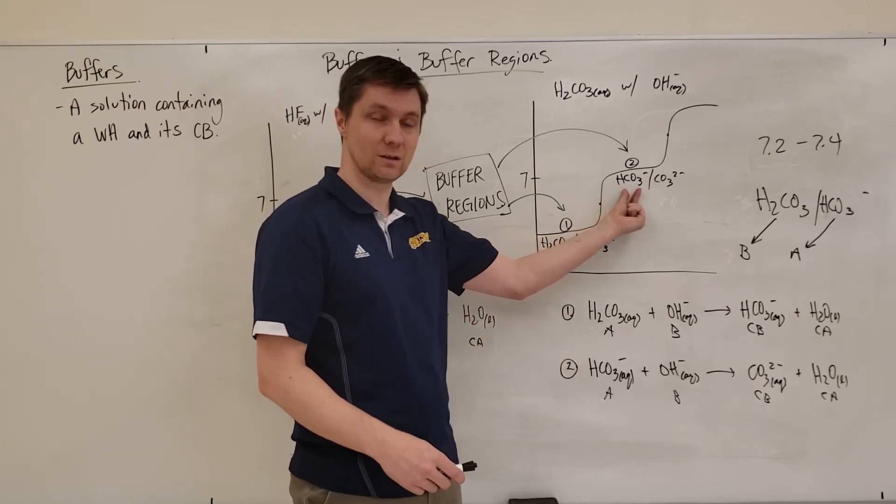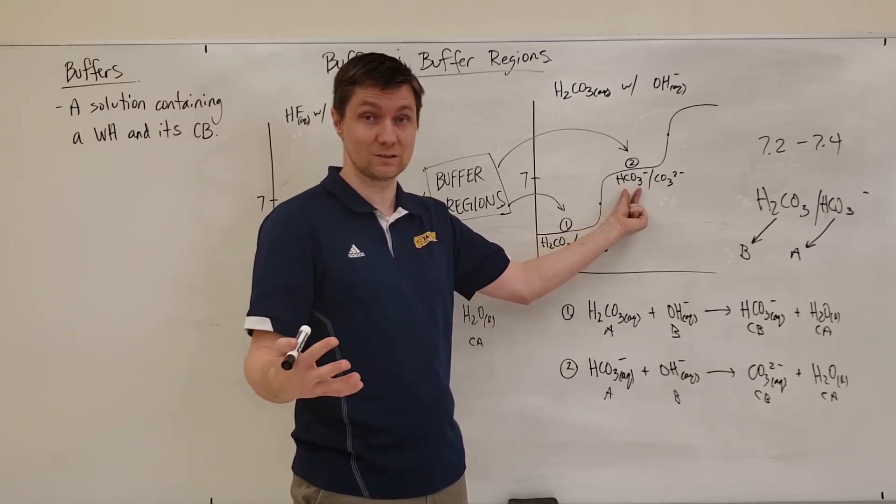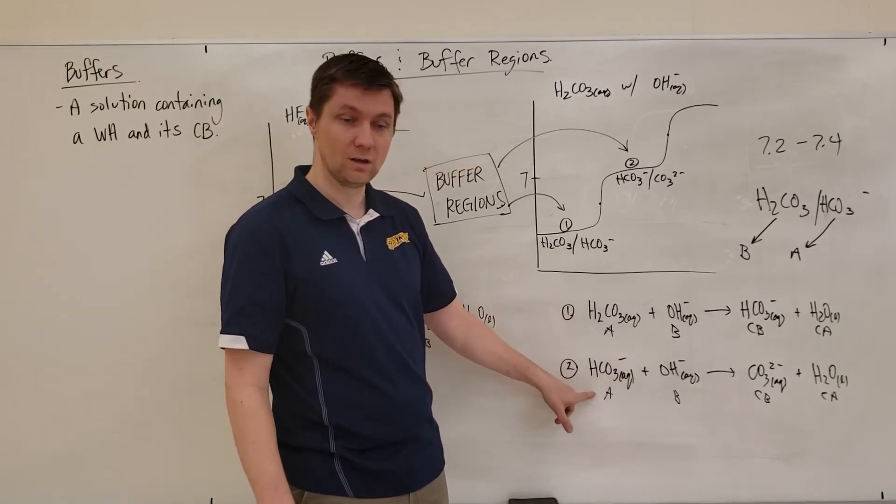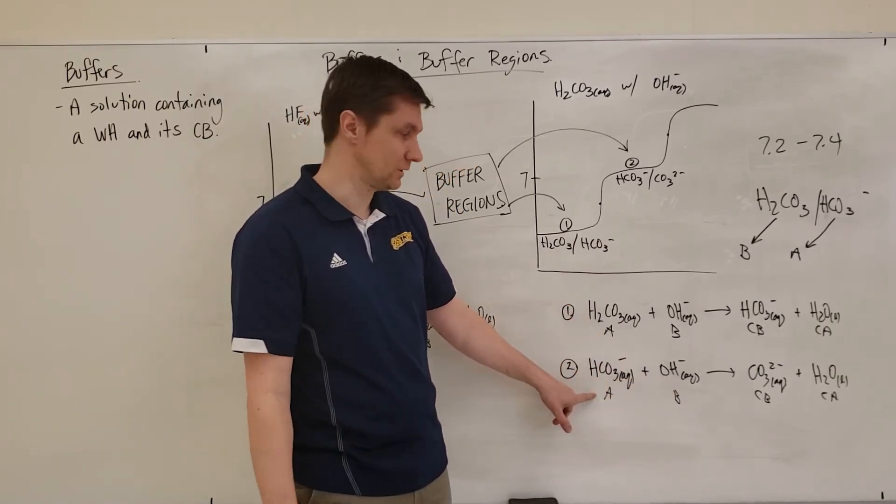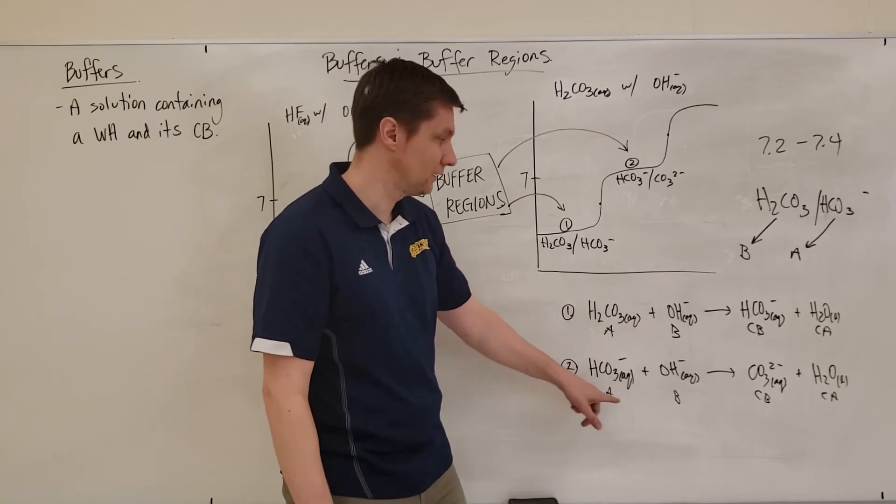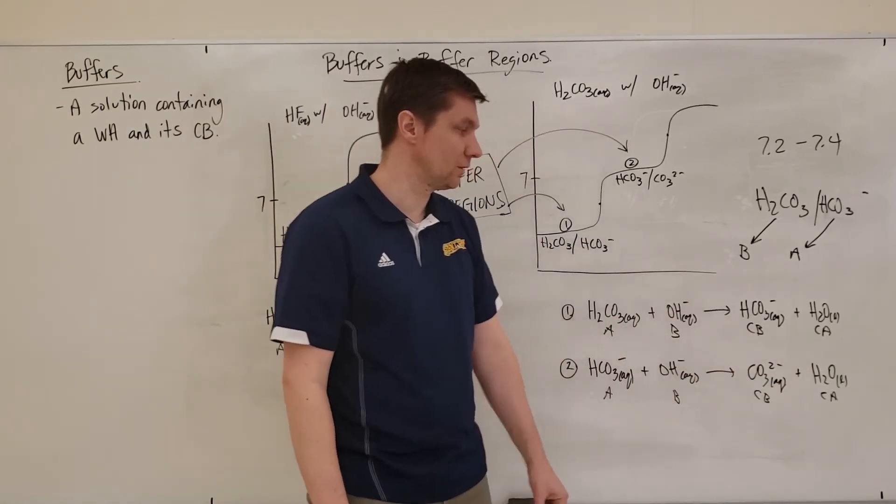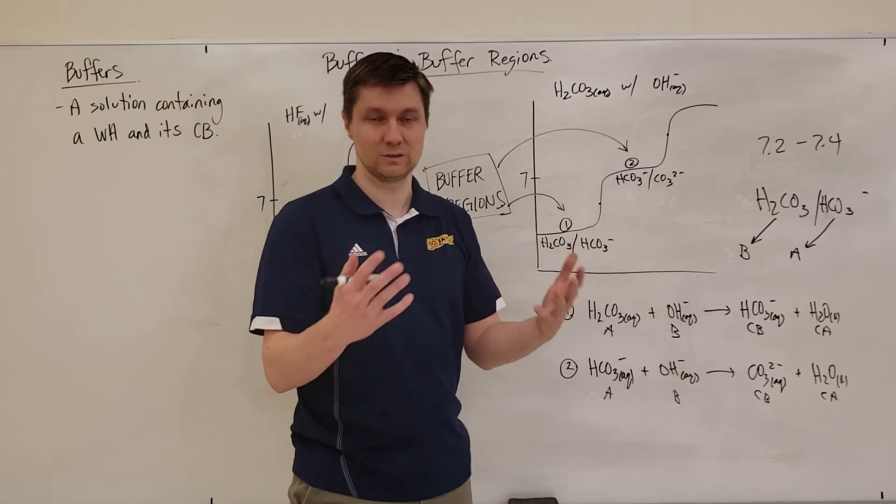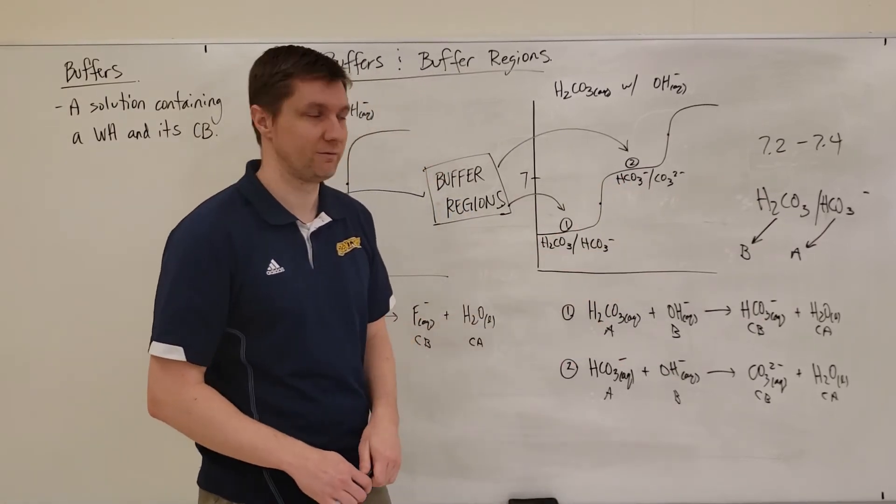And so because this is the strongest acid that's present in the solution, when I add hydroxide to it, it's now going to start to react with that substance as the Bronsted-Lowry acid. It's going to make the conjugate base and the conjugate acid over there on that side. And I start to get a weak acid with its conjugate base in solution. So this is another buffer region.